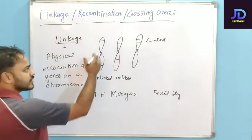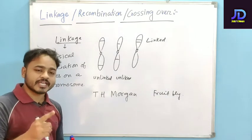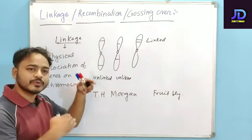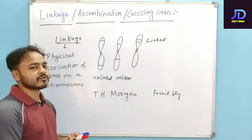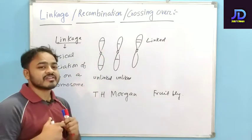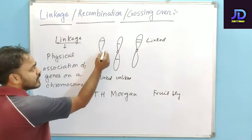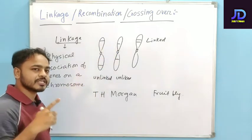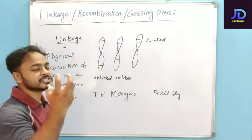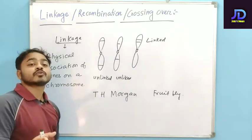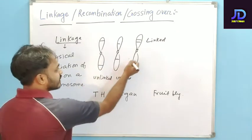When genes are located on the chromosomes, crossing over can take place. Crossing over will take place when there is a distance between the two genes on the same chromosome or different chromosomes. If the distance is far apart, then only crossing over will take place. Because of crossing over, recombinants will be formed — recombinants form when crossing over takes place, and crossing over takes place only when the genes are far apart.